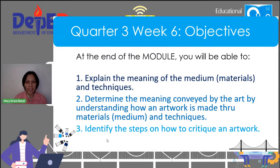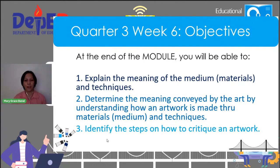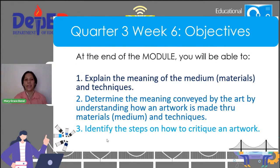Our objectives are: first, explain the meaning of medium or materials and techniques; second, determine the meaning conveyed by the art by understanding how an artwork is made through materials and techniques; and third, identify the steps on how to critique an artwork. Those are three objectives, and hopefully we reach those goals at the end of this module.